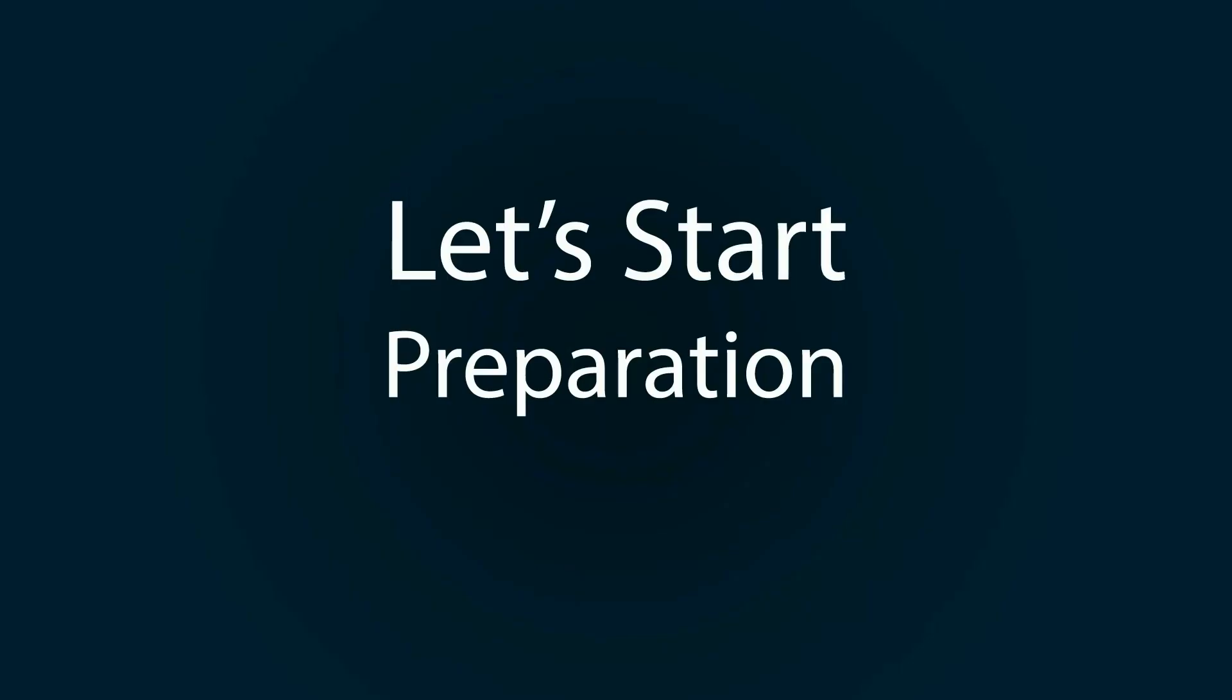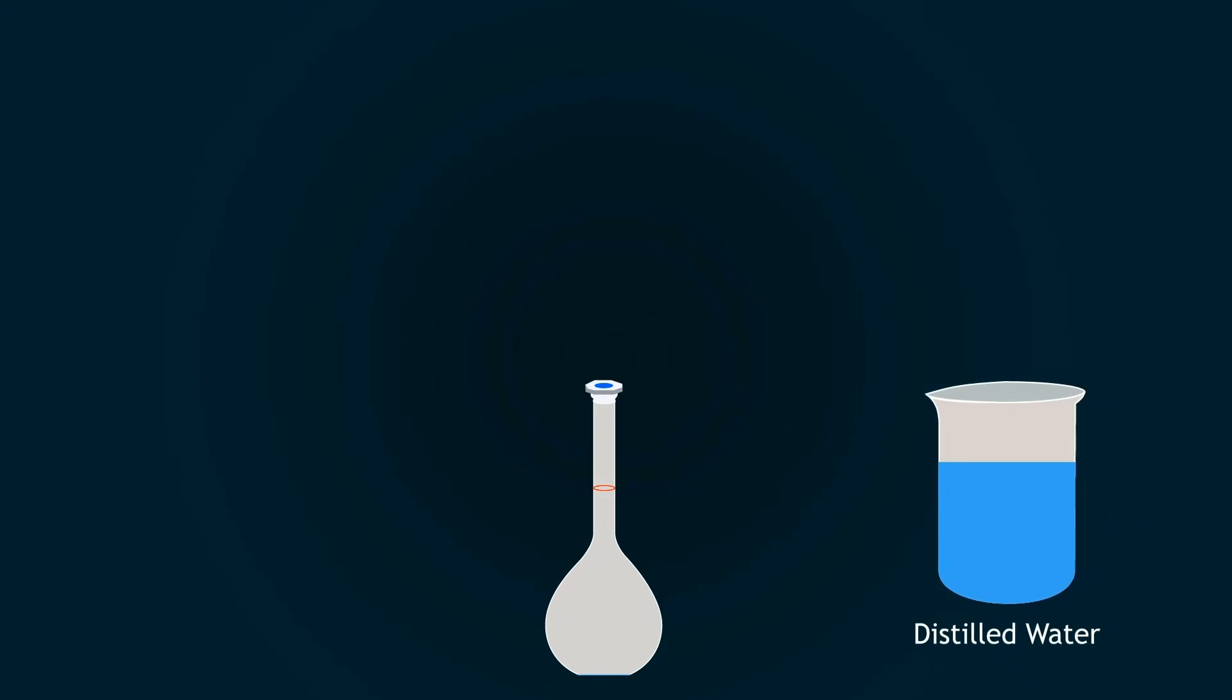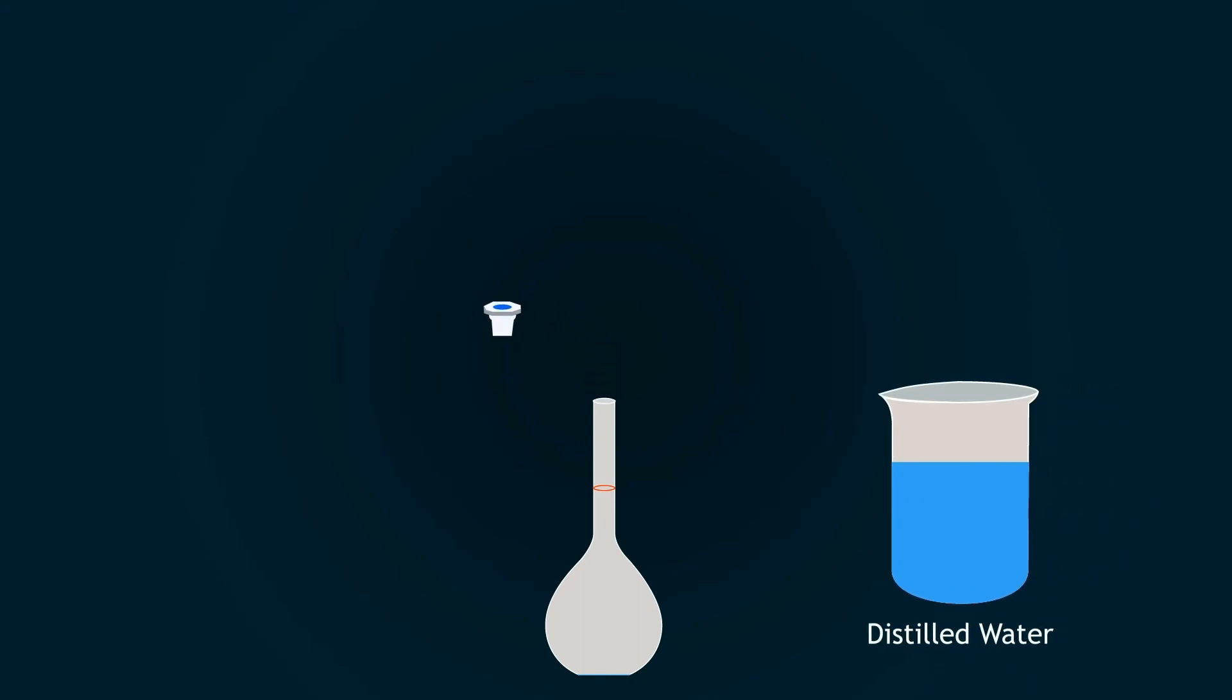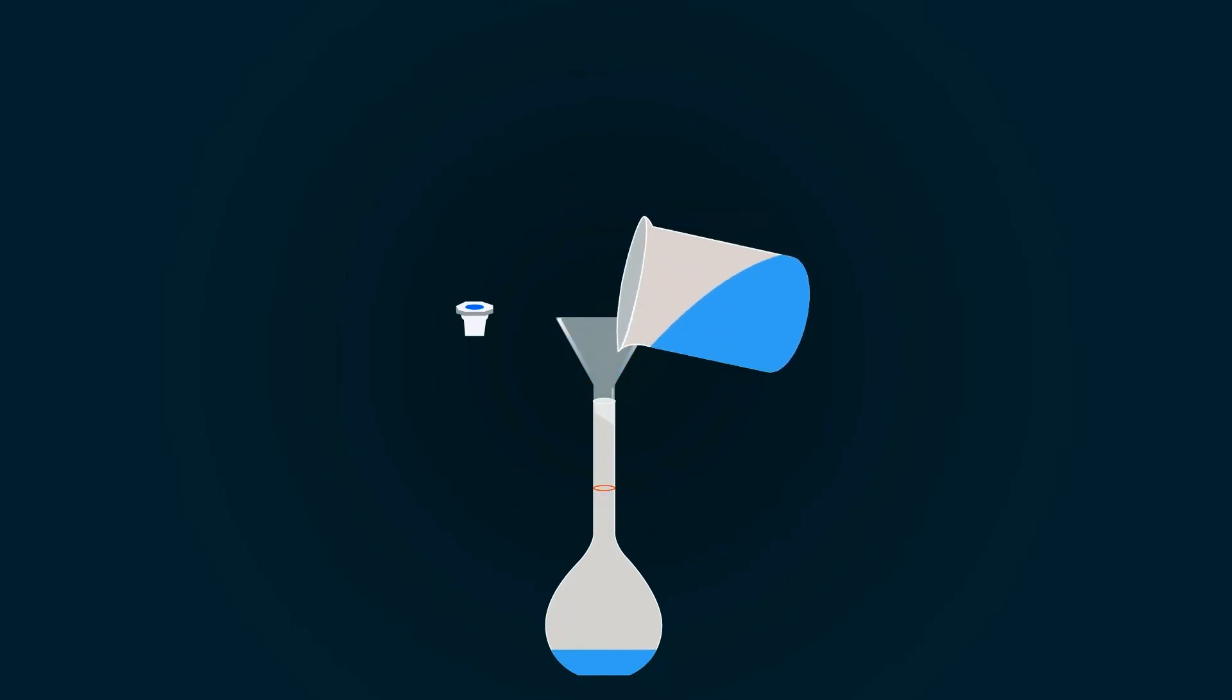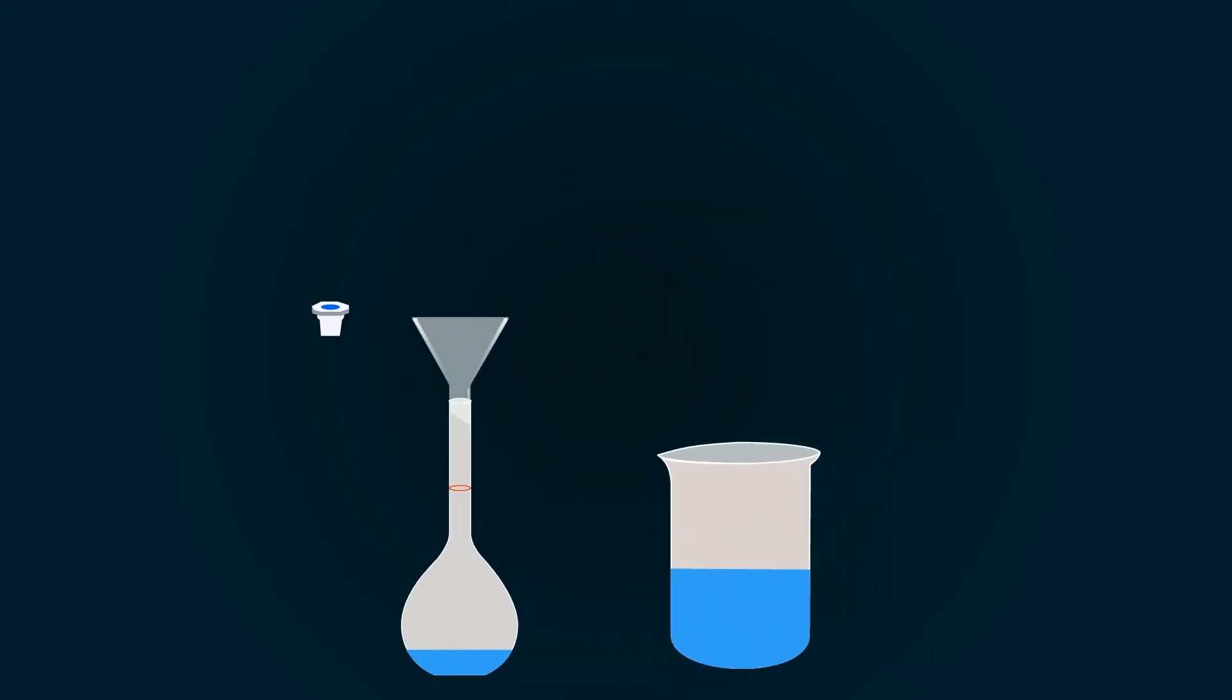Let's start our preparation. First of all, you will take a measuring flask and add some distilled water into this flask with the help of a funnel. Please add some distilled water into the measuring flask while using concentrated acids, because otherwise you may harm yourself and may break your flask.